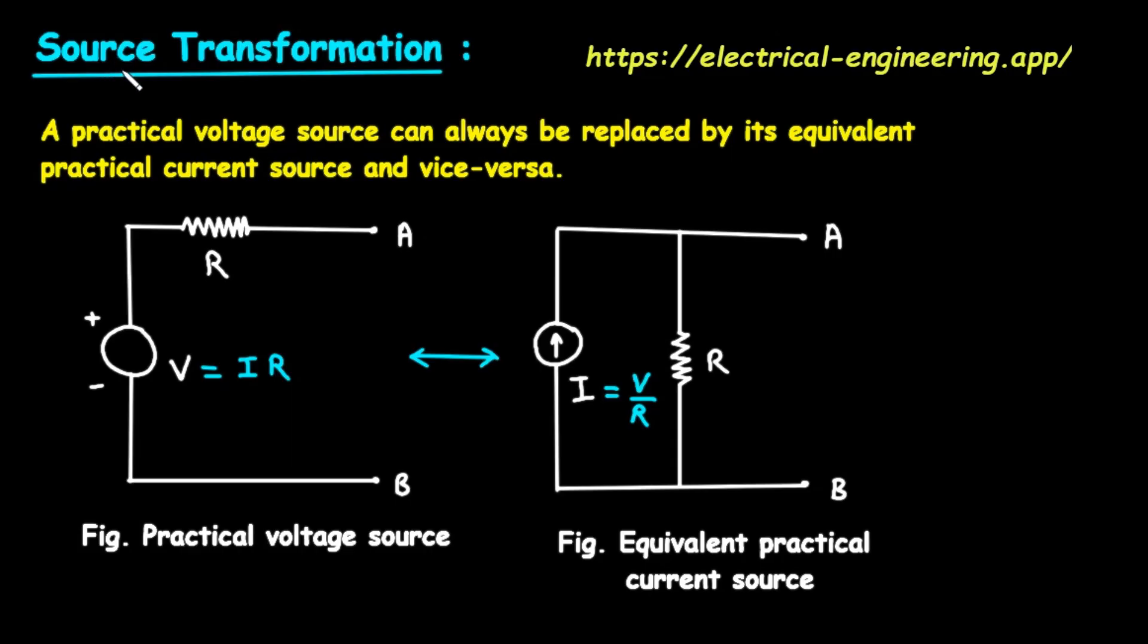Let's begin by looking at the title at the top of the image, written in bright cyan: Source Transformation. Beneath the title, we have a very important sentence in yellow, which is the core principle of this entire topic. It says, a practical voltage source can always be replaced by its equivalent practical current source and vice versa. This single sentence contains a few key ideas, so let's unpack them one by one.